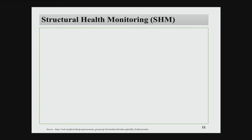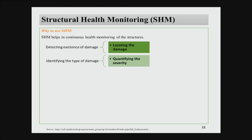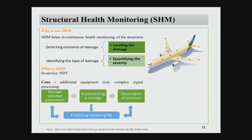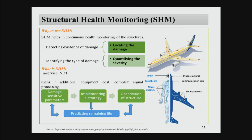Structural health monitoring differs from NDT in terms of continuous monitoring — it detects where damage is, locates it, identifies the type of damage, and quantifies severity. This is similar to our human body — like the brain, spinal cord, and nerve endings in a continuous process. You can get a pinch somewhere and understand where you are affected. The SHM works on a similar principle using sensors to identify where failure is happening. It is a continuous loop: you use various parameters, implement a strategy, observe the structure over time, and predict its lifetime. It is also called in-service NDT.